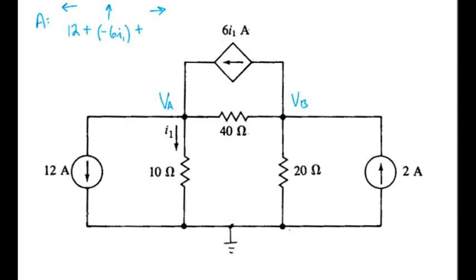The eastward current is VA minus VB over 40. And finally the southbound current is VA over 10. Sum of all that equals zero.